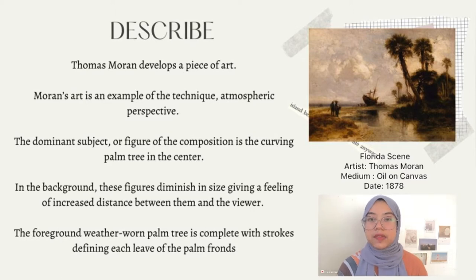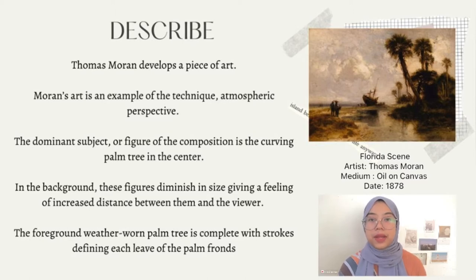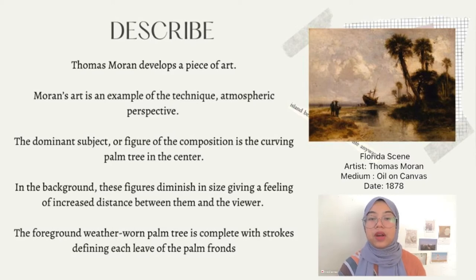In 1878, this painting was created in medium oil on canvas. Thomas Moran develops a piece of art that is inspired by nature. His painting, Florida Scene, is mostly made up of natural form.